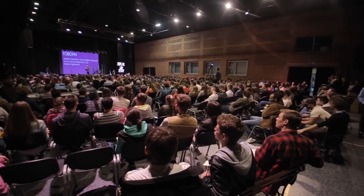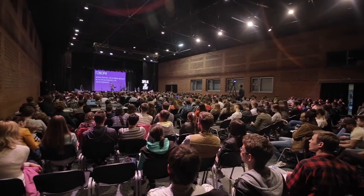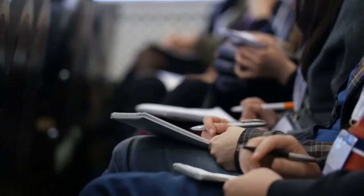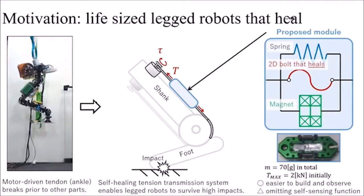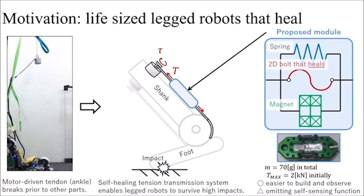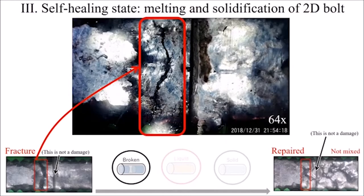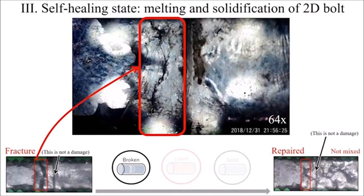At the 2019 IEEE-RSJ International Conference on Intelligent Robots and Systems, robotics from the University of Tokyo's JSK Lab presented a prototype for a robot leg with a tendon fuse made out of a metal that can repair fractures. It does that by autonomously melting itself down and reforming into a single piece.